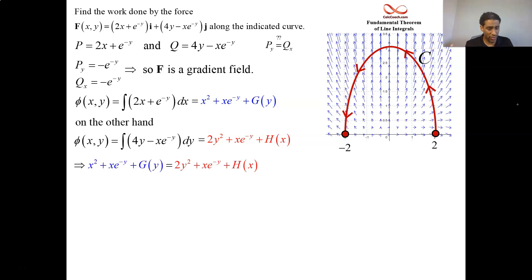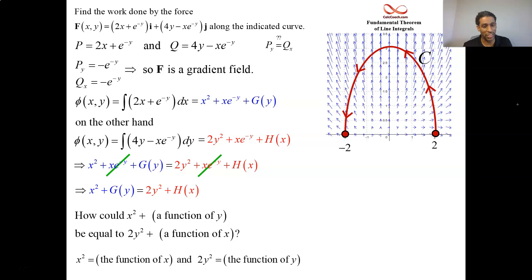These are both equal to φ, so these should be equal to each other. Any terms with mixed variables in it should cancel. And we have the following statement, x squared plus some function of y only is equal to 2y squared plus some function of x only. How could that be? How could x squared plus a function of y be equal to 2y squared plus a function of x? It's just going to be that the function of x is the x squared and the function of y is the 2y squared. You have your function now and you're ready to go.